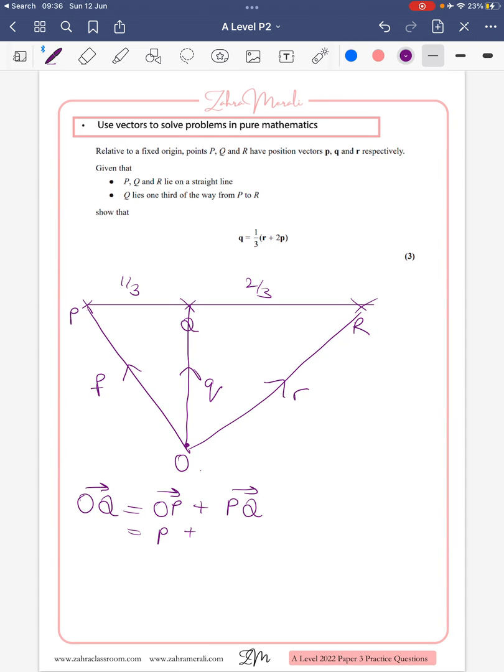And what do we know about P to Q? Well, P to Q is one third of P to R. So that's one third of P to R, which is going from P to R, so it's r minus p.